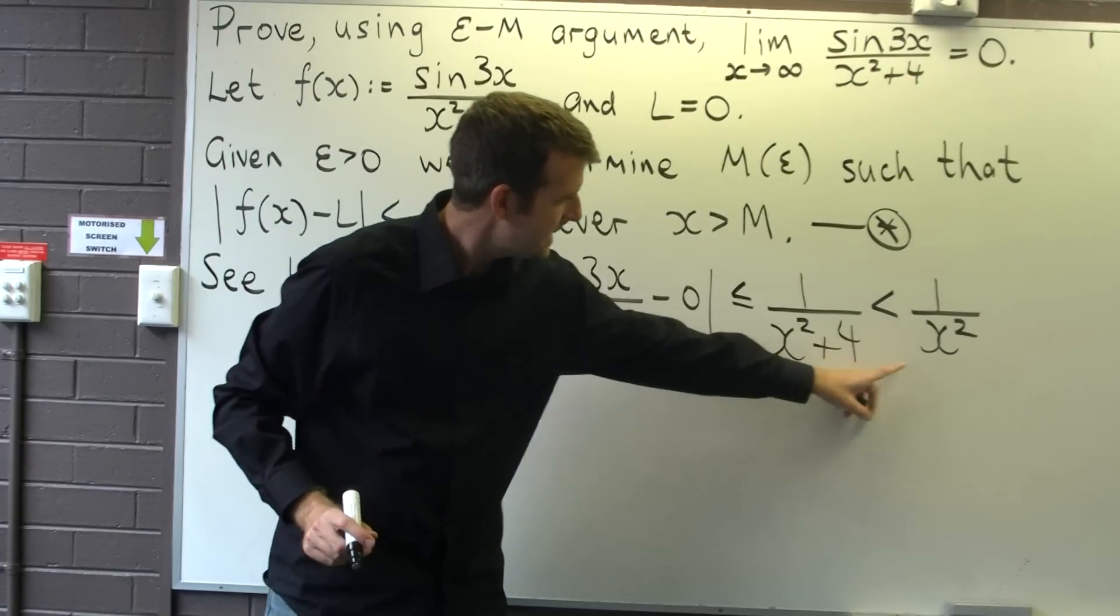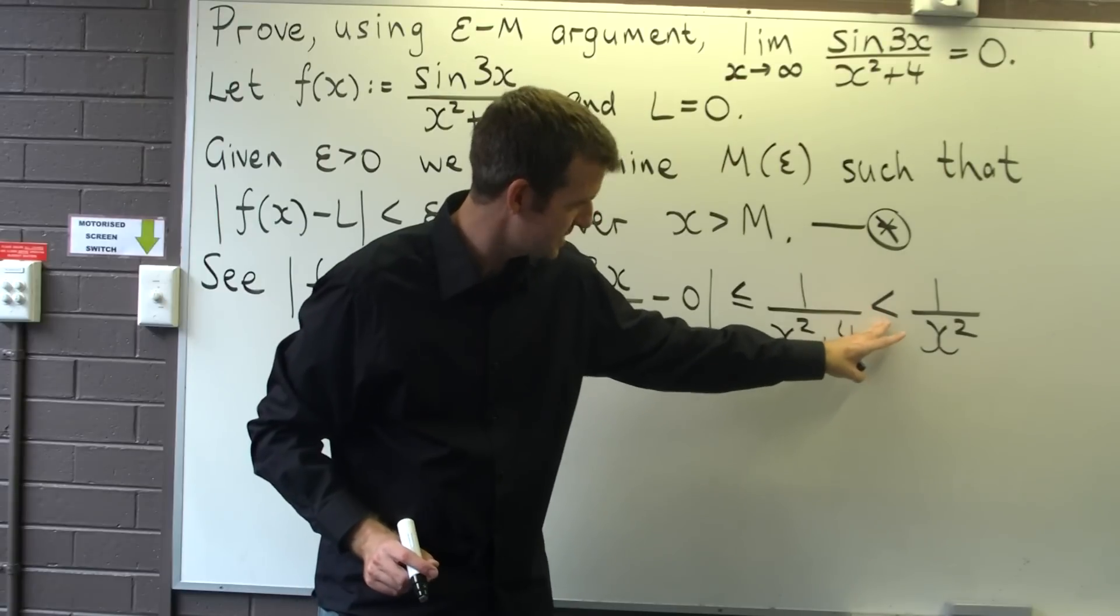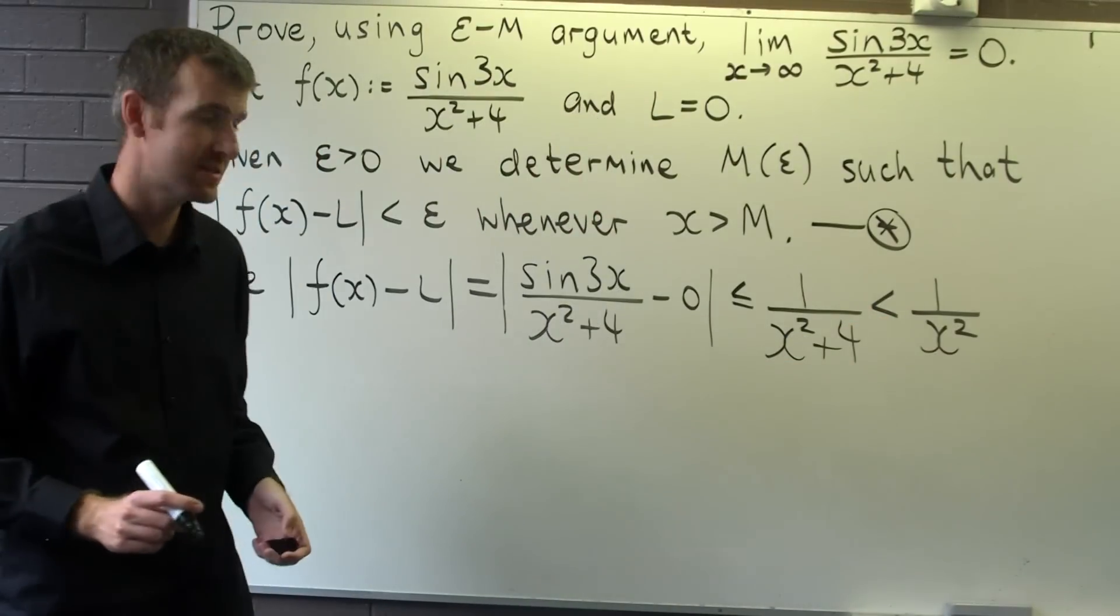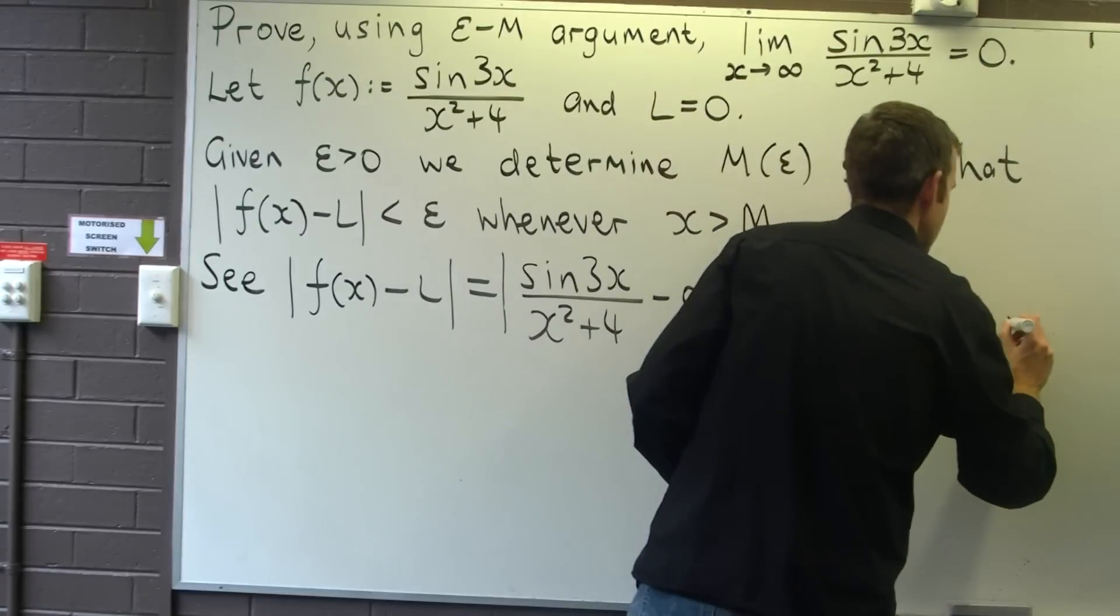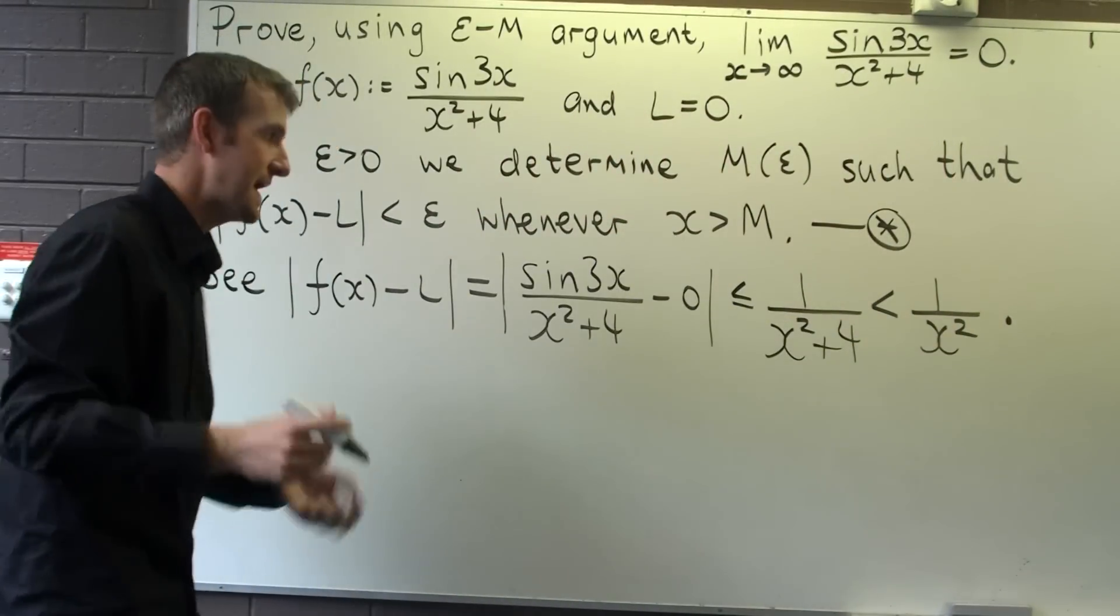Okay, here I've just removed the plus 4 on the bottom and joined them with a strictly less than sign. Alright, now notice the form of this - it's 1/x² to a power, that's a good form to have.